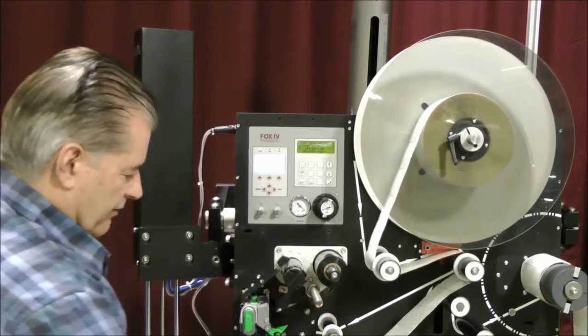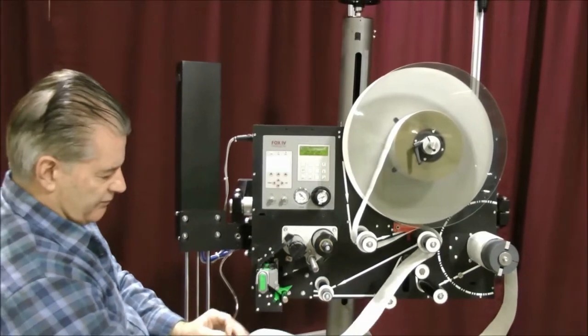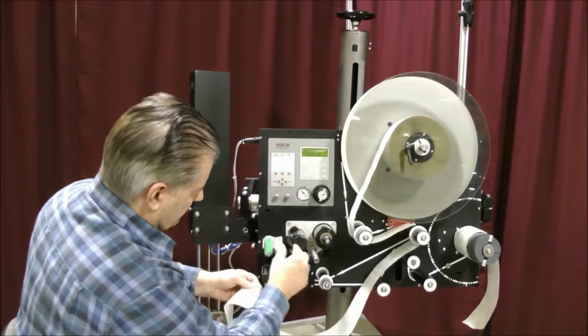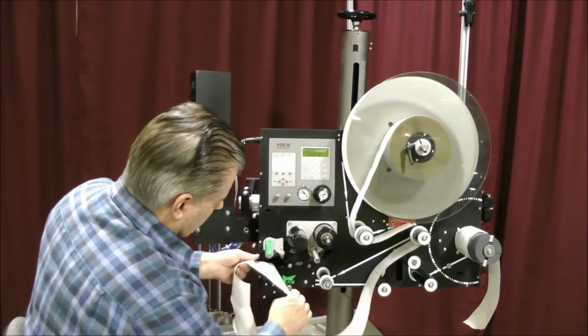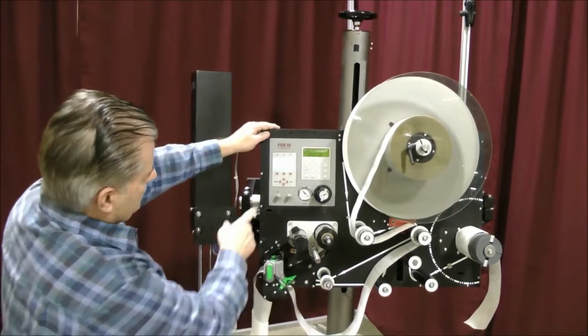Now, it says scan the backing. So, what you're going to do is remove a couple of labels or so off the backing. You're going to load the backing material in the sensor, like so. Close the printhead. Press the escape.